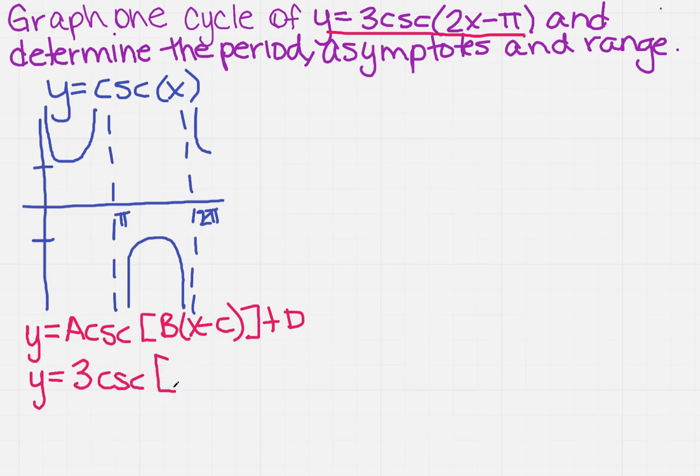Now, I need to get a b, so I need to get x all by itself, so I'm going to have to factor out a 2, and that's going to give me x minus. Now, I want to end up with just pi. So how am I going to do that? Well, I'm going to get pi over 2, because I'm multiplying that by 2. And then I don't have a d, but I'm going to go ahead and write plus 0, just for that placeholder.